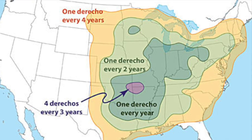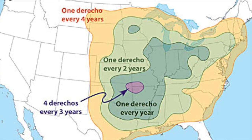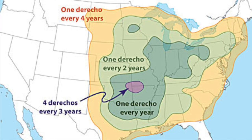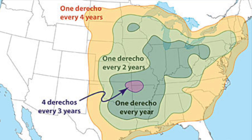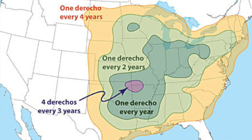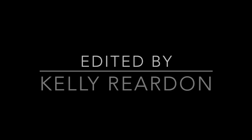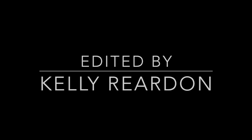Where these two air masses meet, storms flourish along its boundary, and when the environment is just right, it can cause severe storm-producing derechos. I hope this was helpful, and please keep sending your weather questions my way.